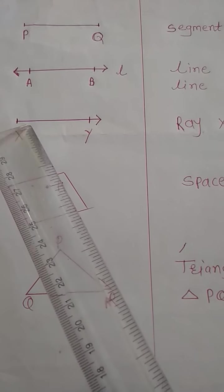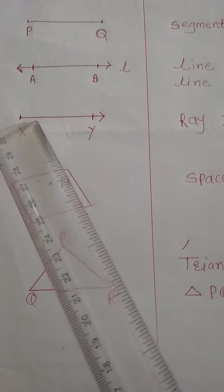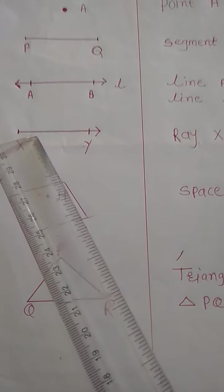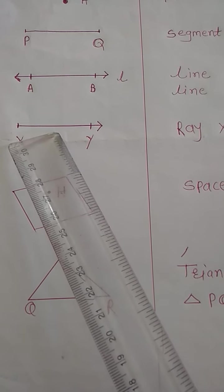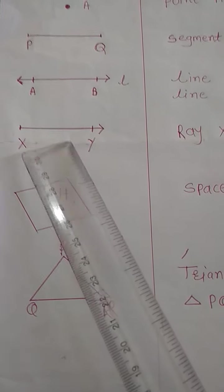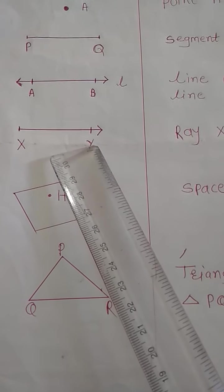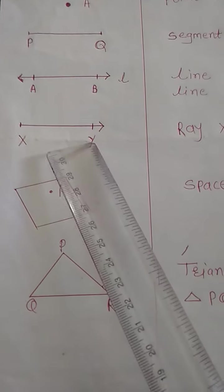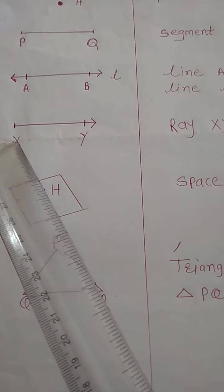Here, point X is the origin. And an overhead arrow is drawn to show that the ray is infinite in the direction of Y. The figure can be read as ray XY, not ray YX.